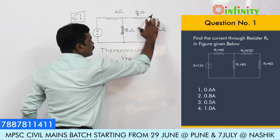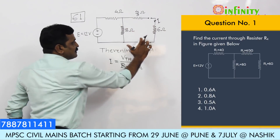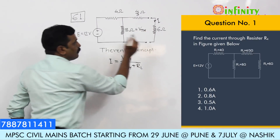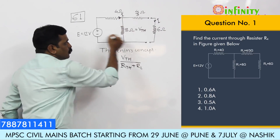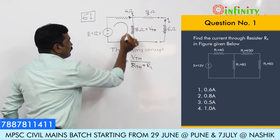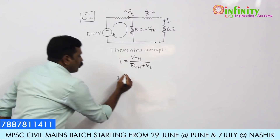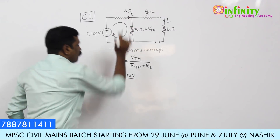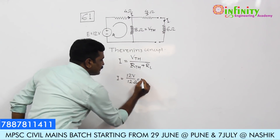The first step is to disconnect the load from the circuit to determine Vth. Vth is the voltage drop across the terminal, which is the voltage drop across the 8 ohm resistance. To determine this voltage we must know the current flowing through that part. Applying Ohm's law, the current I equals total voltage of 12 volts divided by the two resistances in series: 8 plus 4, which is 12 ohms.